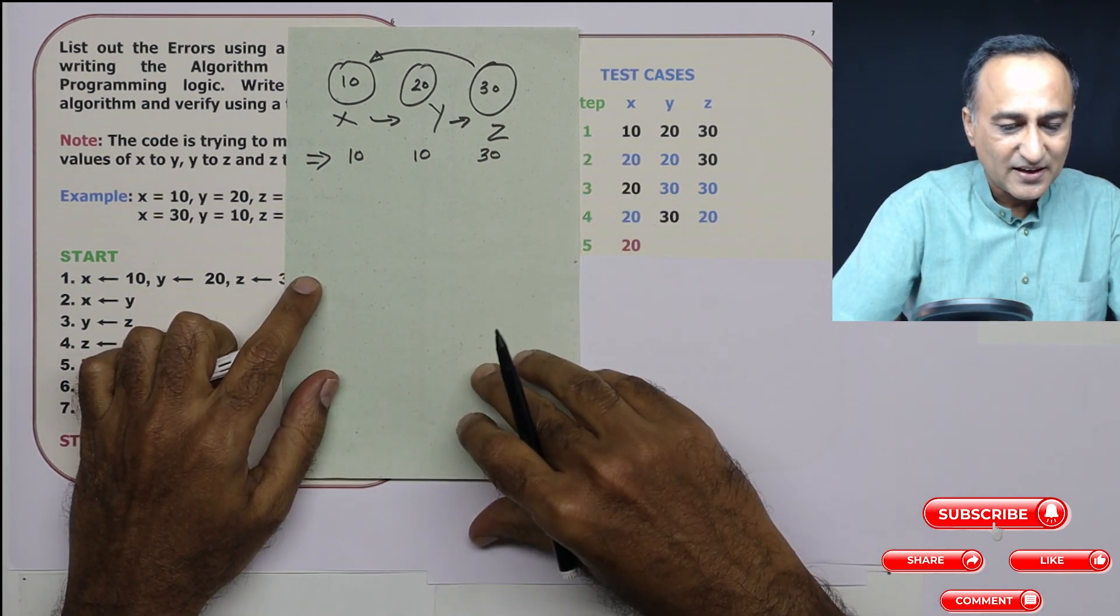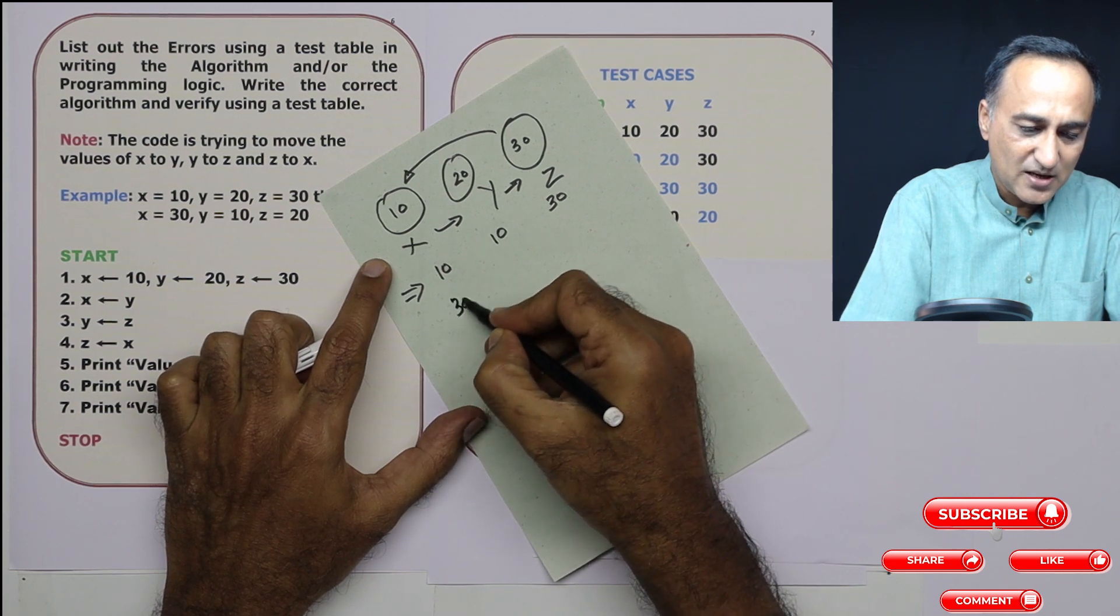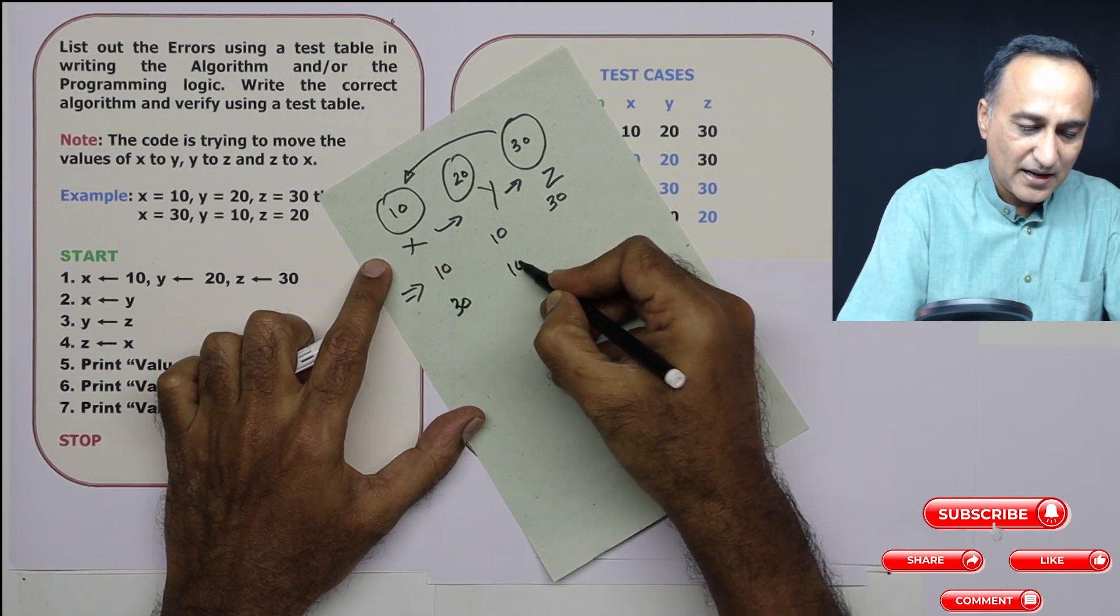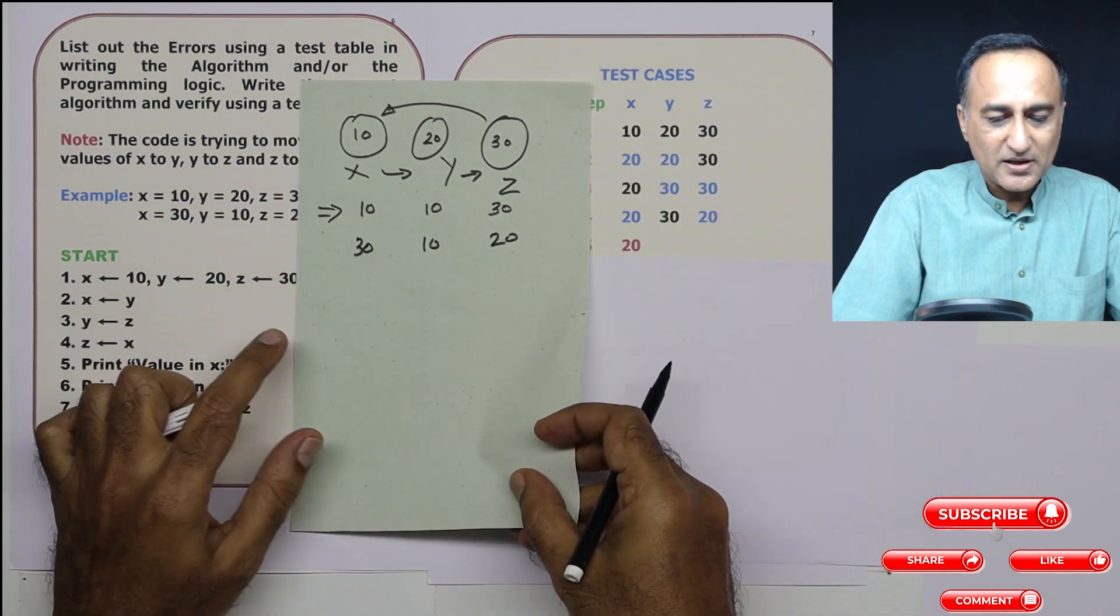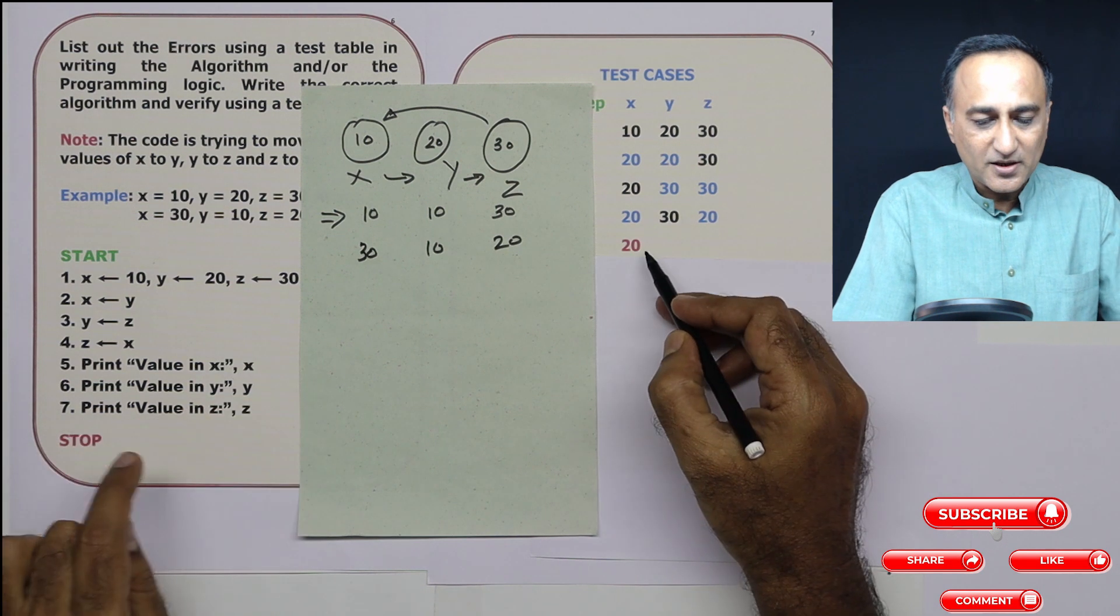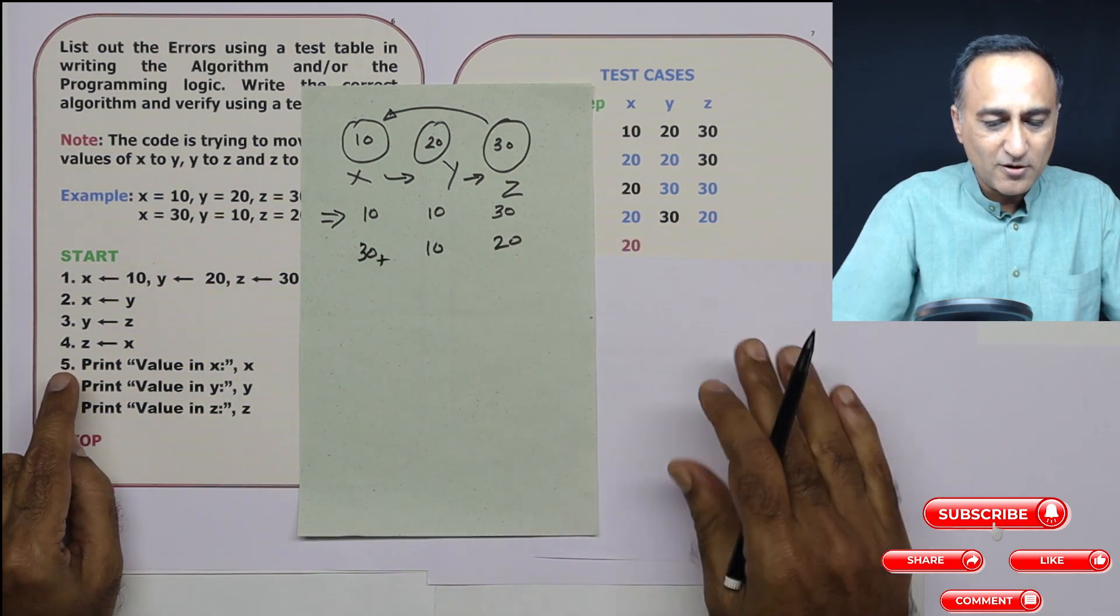So let's write the correct value. This should have been 30, this should have been 10, and this should have been 20. So this should have been the correct value which should have got printed. But here we are printing in step number five the value of x as 20. So we have got the wrong value of x.